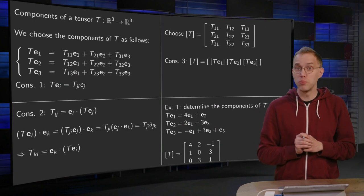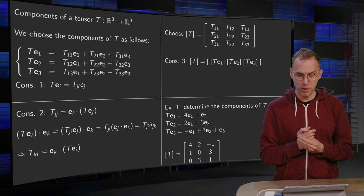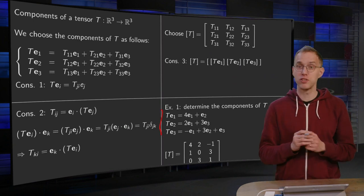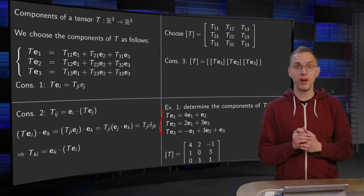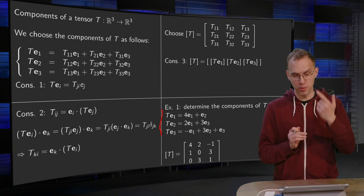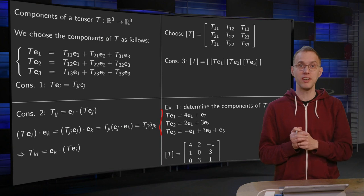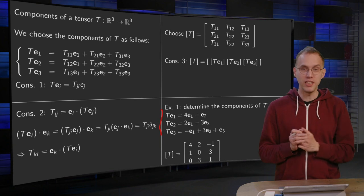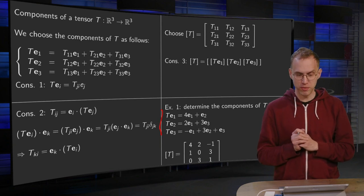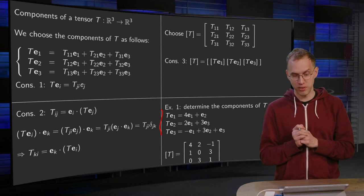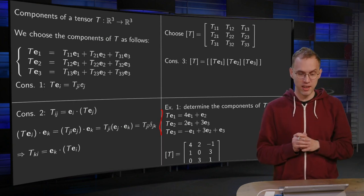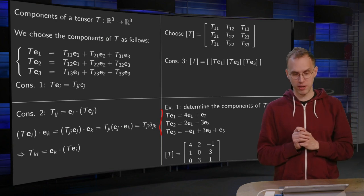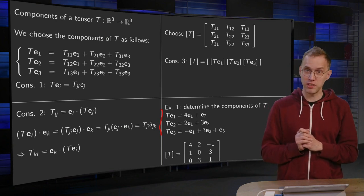So we do a small example, determine the components of T, where for our T we have T of E1 equals 4E1 plus E2 and so on. Now the T of E1 equals 4 times E1 plus 1 times E2 plus 0 times E3, so the first column of T equals 4, 1, 0. The T of E2 equals 2E2 plus 3E3, so the second column will be 0, 2, 3.